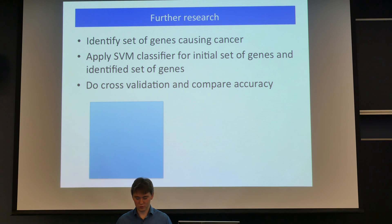And what we now want to do is we want to use these networks to identify a set of genes that cause cancer. And then we will try to train SVM for set of all genes and identified genes, and then conduct cross-validation for these two datasets. And if accuracy will be the same, we can conclude that these genes were identified correctly.